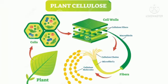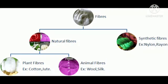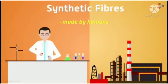Remember students, plant fiber consists of a structural material called cellulose. Wool and silk are examples of animal fibers. They are made up of proteins. On the other hand, synthetic fibers are made by human beings using chemicals.